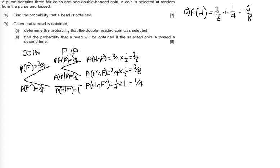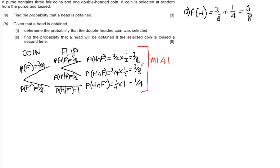In terms of marks, we get a method mark and an accuracy mark for a correctly drawn tree diagram complete with end probabilities. We then get an accuracy mark for the five-eighths answer at the end of part A.